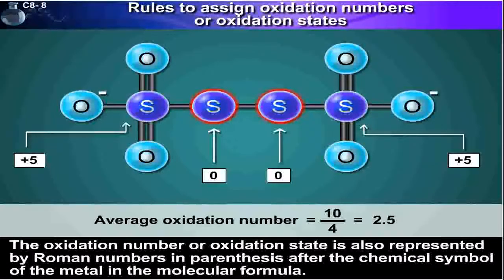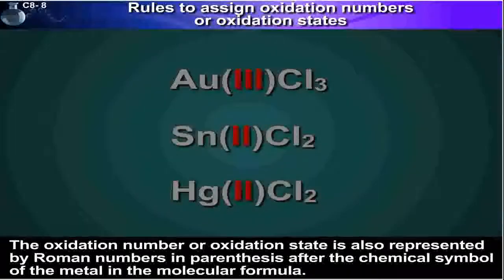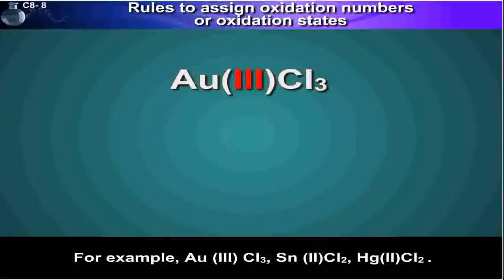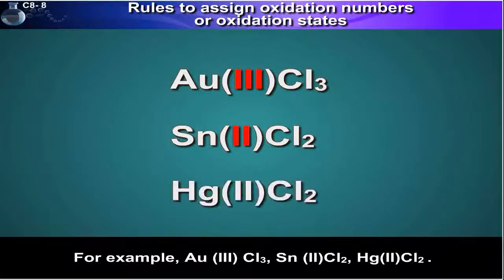The oxidation number, or oxidation state, is also represented by Roman numbers in parenthesis after the chemical symbol of the metal in the molecular formula. For example, AuCl₃, which is gold trichloride; SnCl₂, which is stannous chloride; and Hg₂Cl₂, which is mercuric chloride, etc.